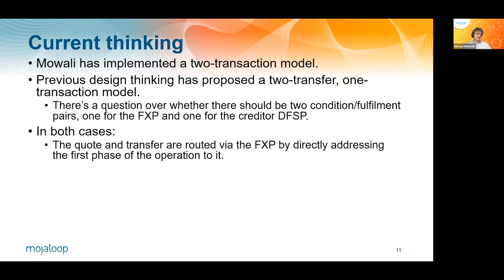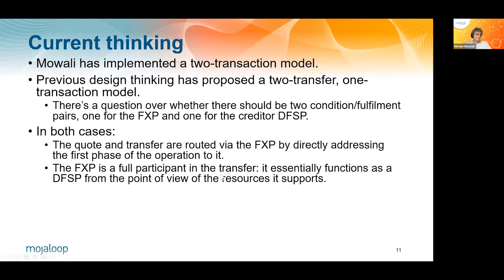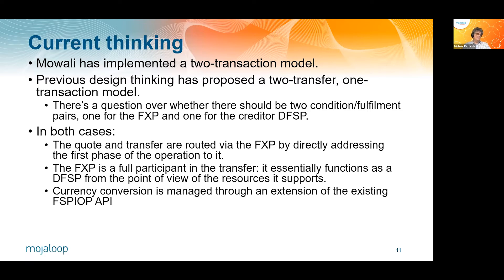There's a question about whether there should be two condition-fulfillment pairs — one for the foreign exchange provider and one for the credit of the DFSP — but at the moment we hadn't come to a decision about that. In both cases, the quote and the transfer are routed via the FXP by directly addressing the initial source currency transfer. The foreign exchange provider would be a full participant in the transfer, functioning as a DFSP from the point of view of the resources it has to support, requiring an extensive series of API functions not all of which are related to currency conversion.